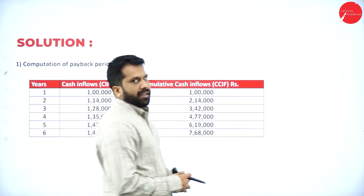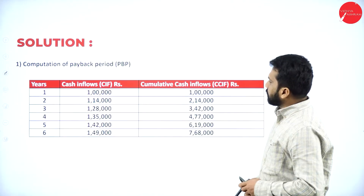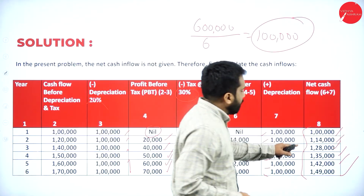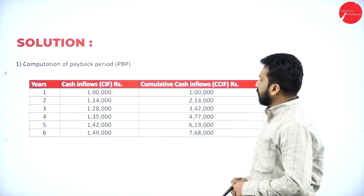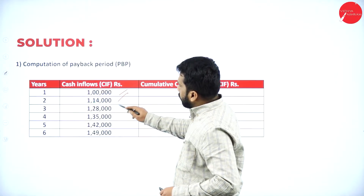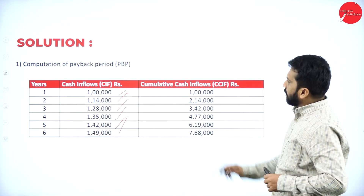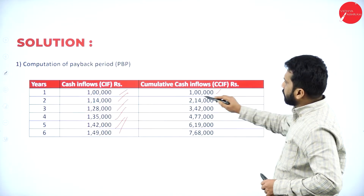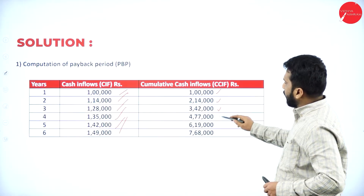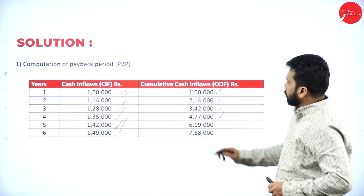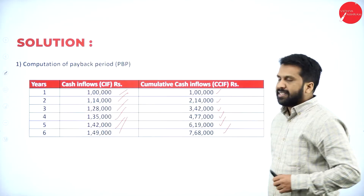Once done with net cash flow, we go with cumulative cash flow. The net cash flows are: 1 lakh, 1 lakh 14,000, 1 lakh 28,000, 1 lakh 35,000, 1 lakh 42,000, and 1 lakh 49,000. Cumulative: year 1 = 1 lakh; plus 1 lakh 14,000 = 2 lakh 14,000; plus 1 lakh 28,000 = 3 lakh 42,000; plus 1 lakh 35,000 = 4 lakh 77,000; plus 1 lakh 42,000 = 6 lakh 19,000.